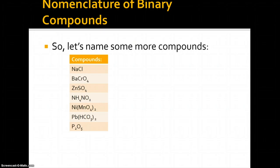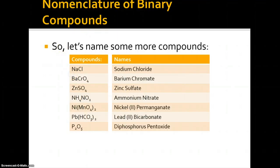Now let's talk about nomenclature of binary compounds and name some of these. You can pause the video and try to name all of them. So: NaCl is sodium chloride; BaCrO4 is barium chromate; ZnSO4 is zinc sulfate; NH4NO2 is ammonium nitrate.